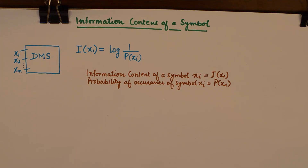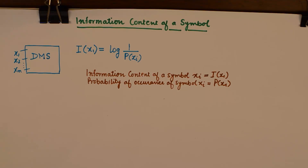Now if you understand a few important key points about the information content of a symbol, it will be easier to do well in numericals. The information content of a message with a higher probability will be lower. So if a symbol has a higher probability, then the information contained in that message will be less. I will give you an example of this.